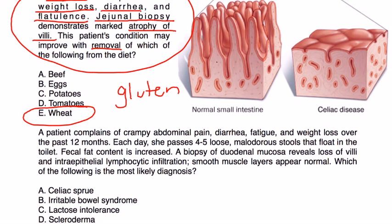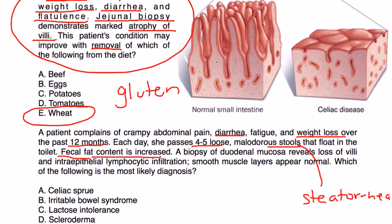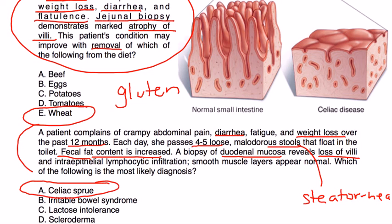The second vignette: a patient complains of crampy abdominal pain, diarrhea, fatigue, and weight loss over the past 12 months. Each day she passes four to five loose, malodorous stools — that's steatorrhea — that float in the toilet. Fecal fat content is increased. A biopsy of the duodenal mucosa reveals loss of villi and intraepithelial lymphocytic infiltration; smooth muscle layers appear normal. What is the most likely diagnosis? Again, this is another clinical vignette summarizing celiac disease, also known as celiac sprue.